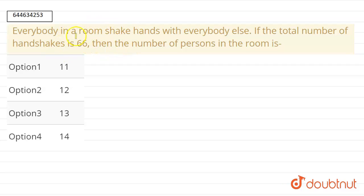Look guys, this question: we are given that there is a room and everybody has to shake hands with everyone else, and the total number of handshakes is 66. Then we have to find the number of persons in that room, right?